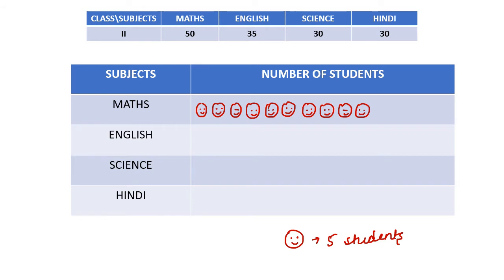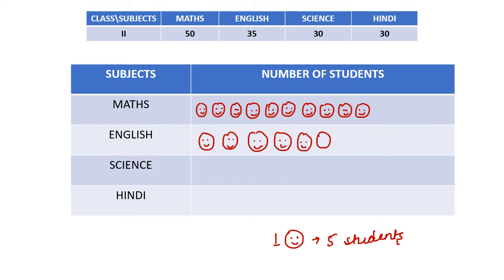For English, we have 35 students. If one symbol represents 5 students, then for 35 we have to draw 7 such symbols: 1, 2, 3, 4, 5, 6 and 7.